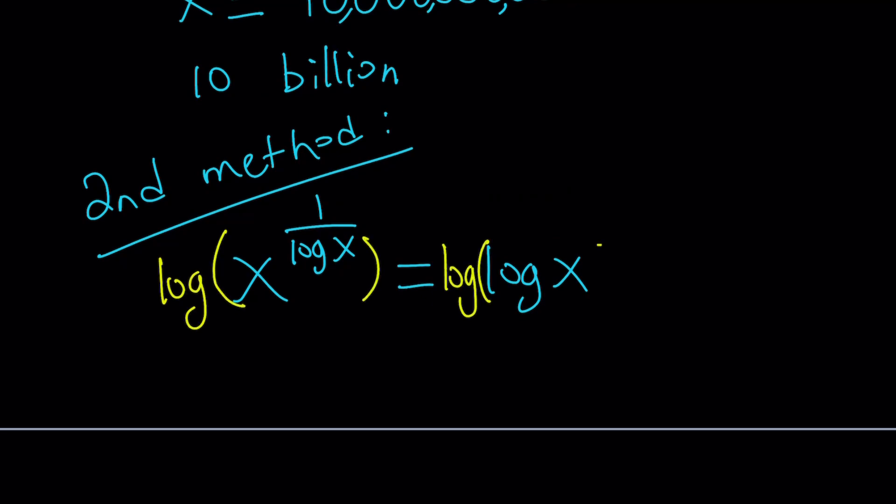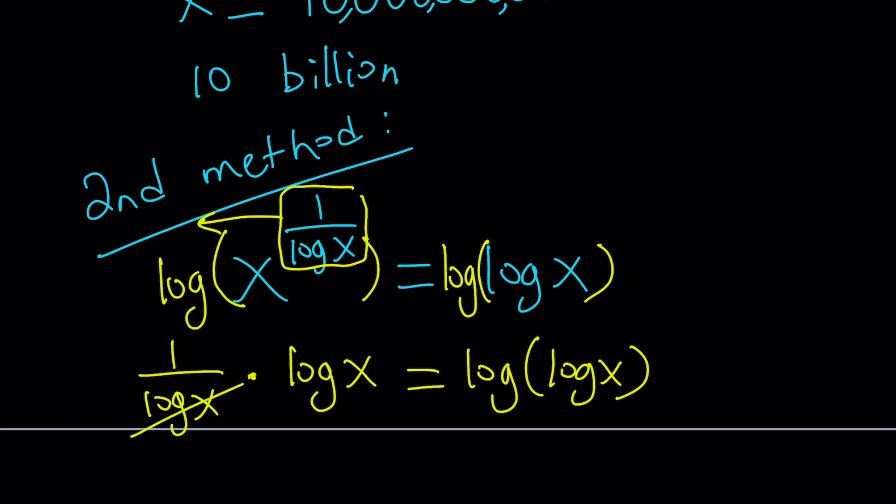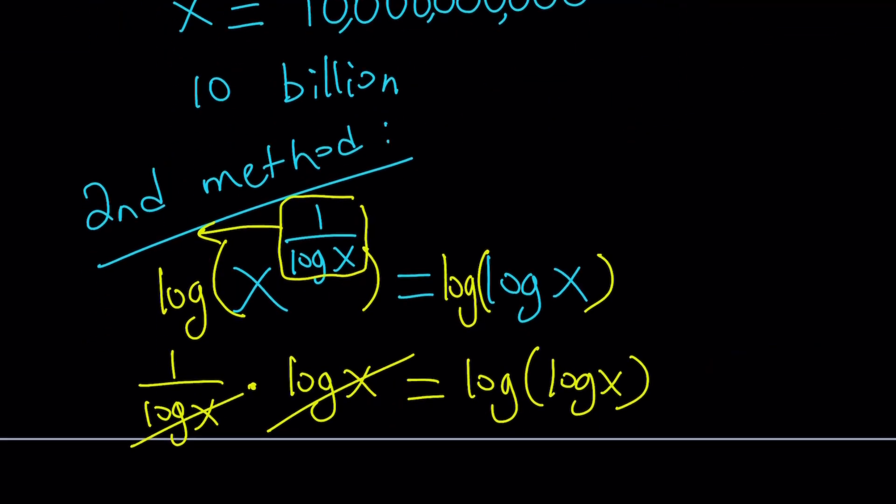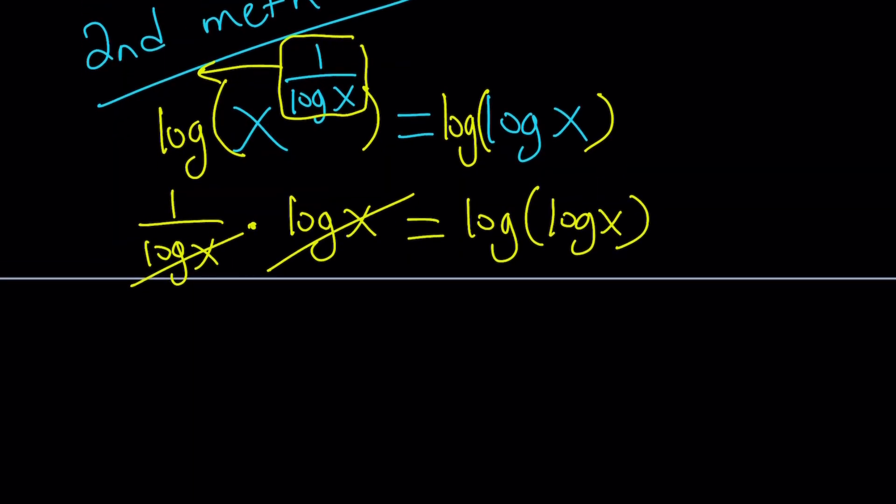And we have a log already on the right-hand side. It's just going to be log log x. Now, using properties of logarithms, we can bring this down. So, this becomes 1 over log x times log x. Interesting, right? Equals log of log of x. Again, these two are going to cancel out. And notice that when we use the first method, we named log x, t, and then they canceled out. Pretty much the same idea with different methods, different approaches. So, from here, we get the following. Log log x equals 1.